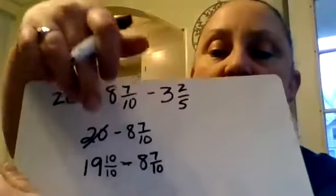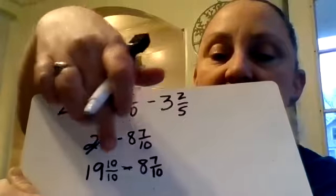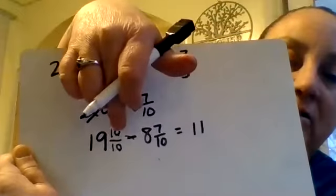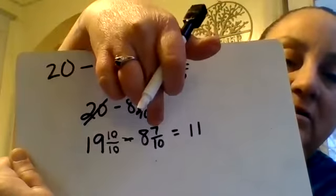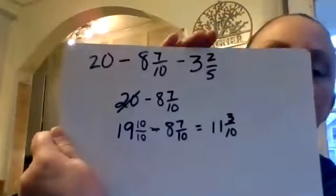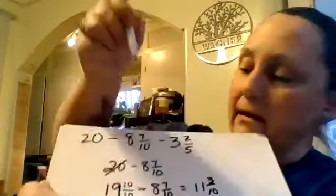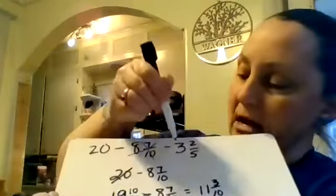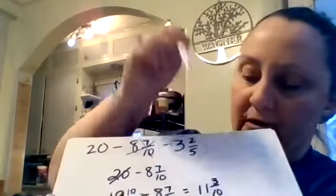Okay, now this shouldn't seem too bad. You should see 19 minus 8 is 11, and then you should see the 10 over 10 minus 7 over 10. 10 minus 7 is 3 over 10. Okay, that's the first part. We did that. We did this guy, we took him out. Now we gotta take this guy out of there.